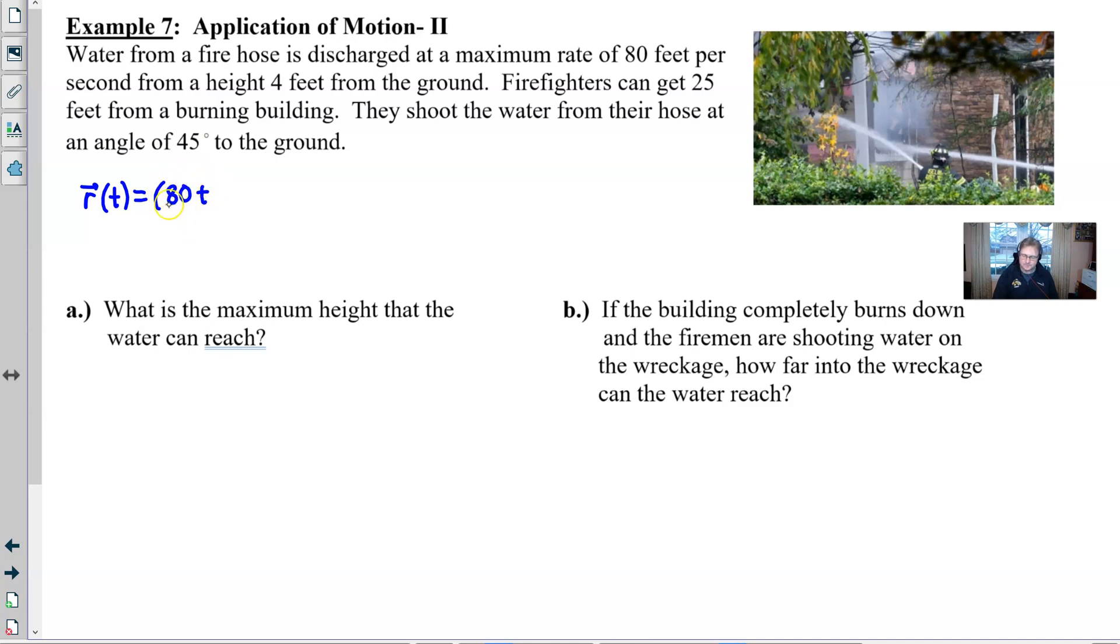And then we have an angle that we have to contend with. That's cosine of 45 degrees. And that would comprise our i vector or x component.